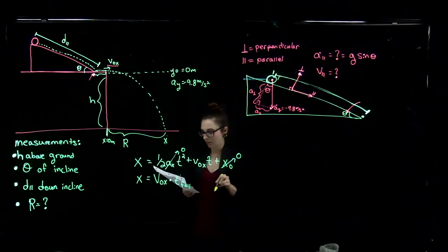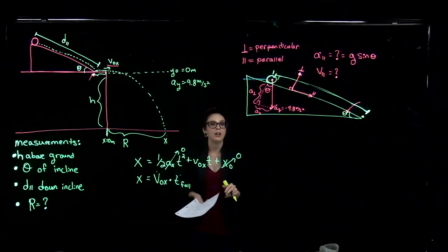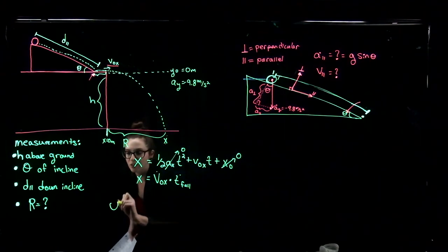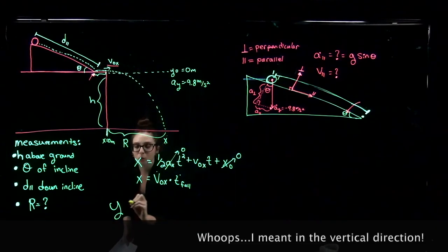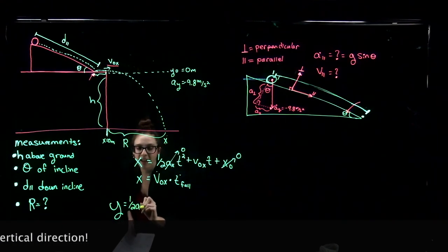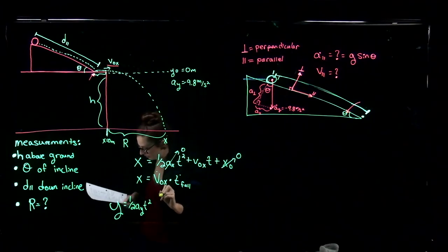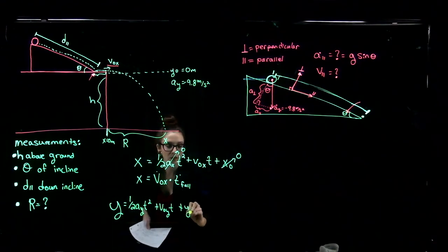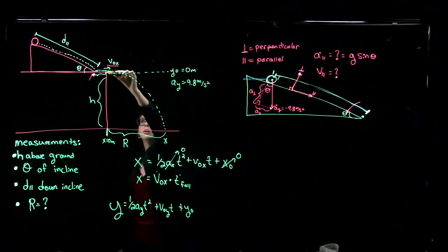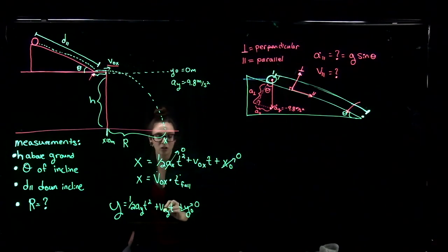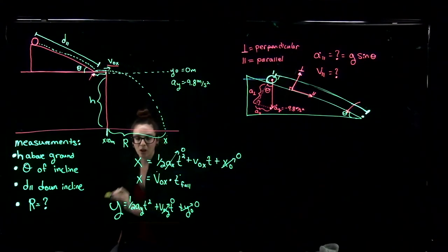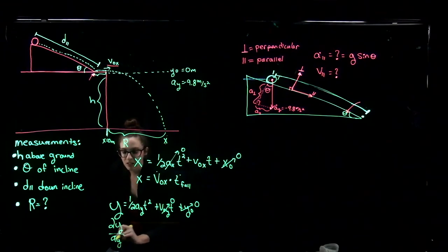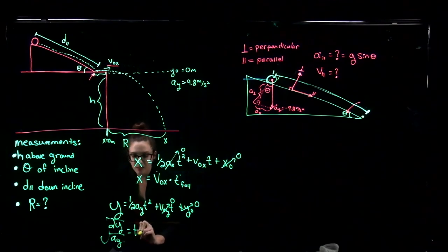We don't know the velocity or the time to fall yet. Let's find the time to fall first using our equation for motion in the y direction during free fall: y equals one half times acceleration in the y direction times t squared, plus initial velocity in the y direction times t, plus initial y position. Setting y equal to 0 at the top of the table and with zero initial y velocity, we solve for t: t equals the square root of 2y over acceleration in the y direction.